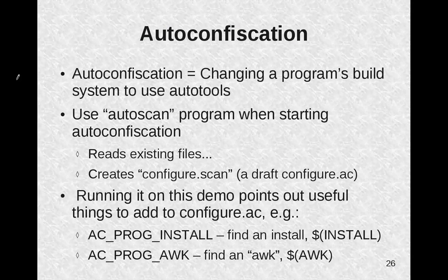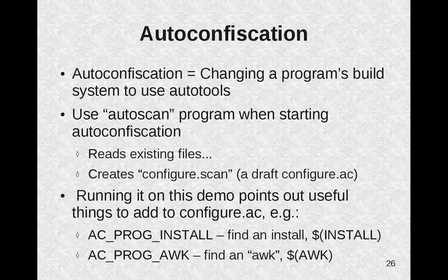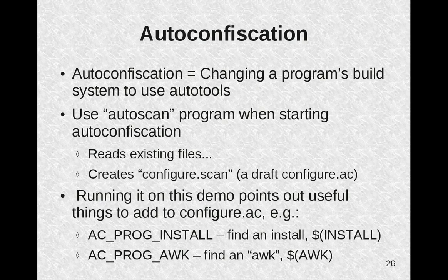The process of changing a program's build system to use the autotools is often called auto-confiscation. To start, you should probably use the autoscan program. It reads your existing files and creates a configure.scan file, which is basically a draft configure.ac. Look at it, make some changes, and when you like it, rename it to configure.ac and that should get you started. Running it on this demo will suggest useful things like AC_PROG_INSTALL, which looks for a useful install program, and AC_PROG_AWK to find awk.